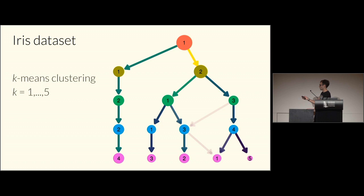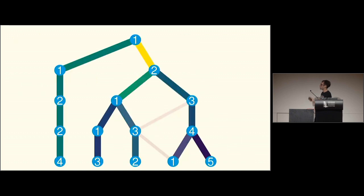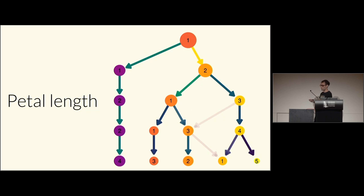Because this is all built on ggplot, we can adjust aesthetics however we want. More usefully, we can overlay extra information: here I've colored nodes by the average petal length of samples in each cluster. The purple nodes — shortest petals — correspond to a known feature of one species, giving a validity check and clues about what each branch represents.